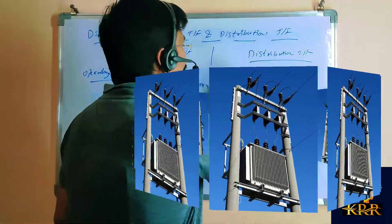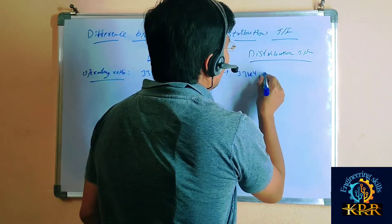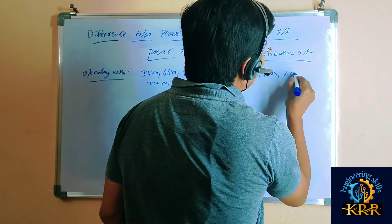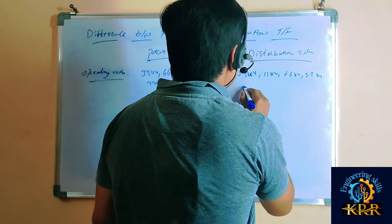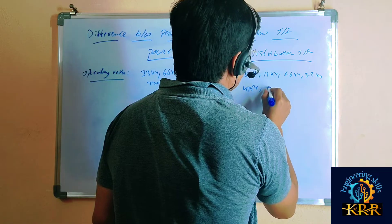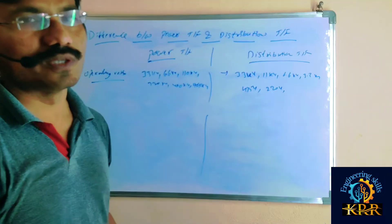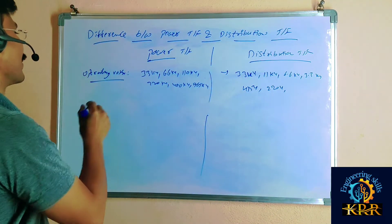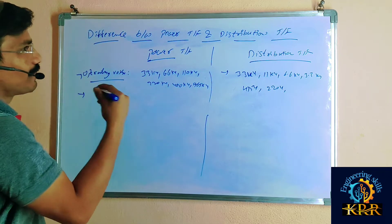If you go for the distribution transformer, the operating voltage is 33 kV and below. The operating voltages are 33 kV, 11 kV, 6.6 kV, 3.3 kV, 450 volts, and 220 volts. This range of operating voltages is where we use the distribution transformer.